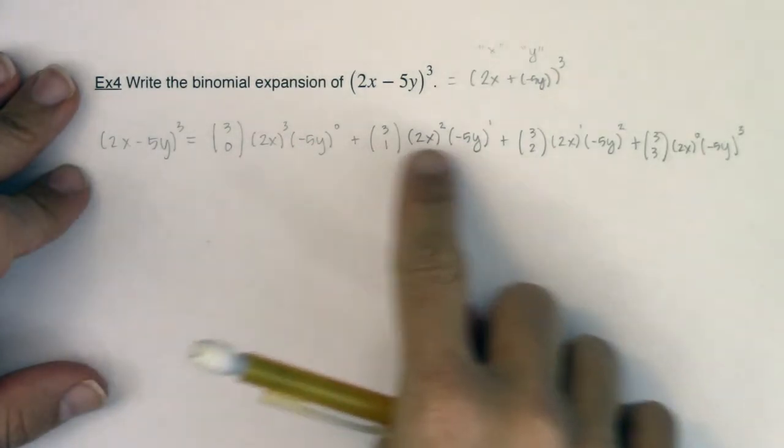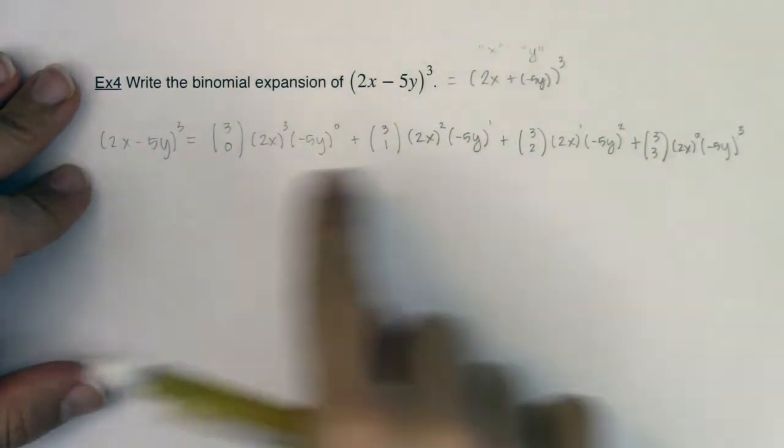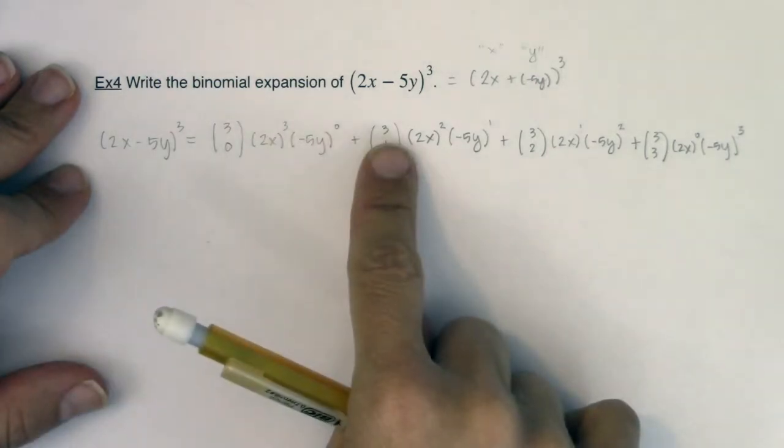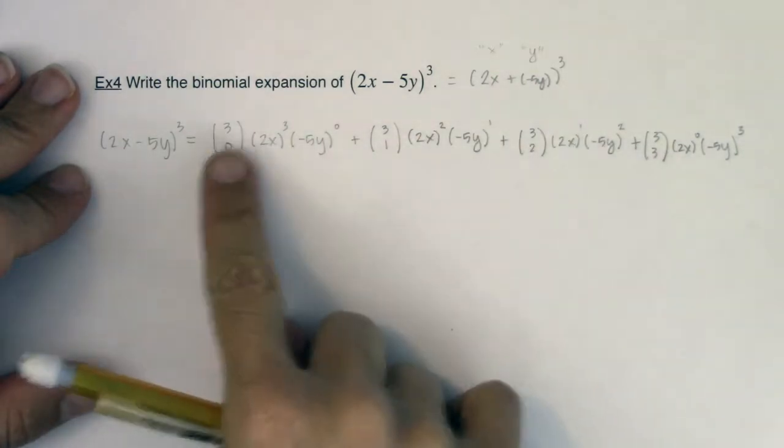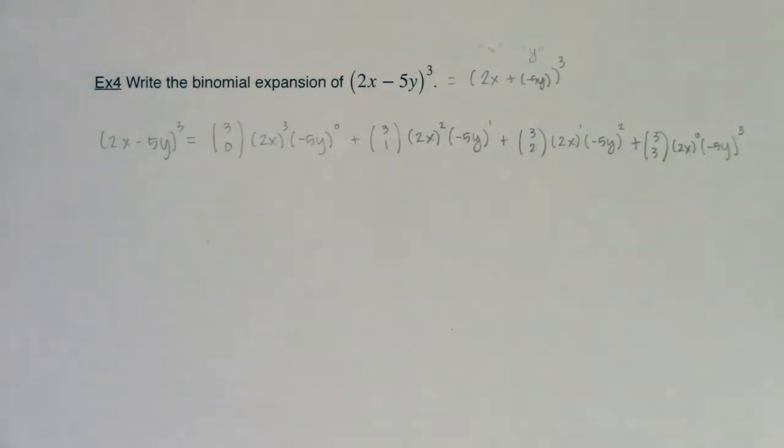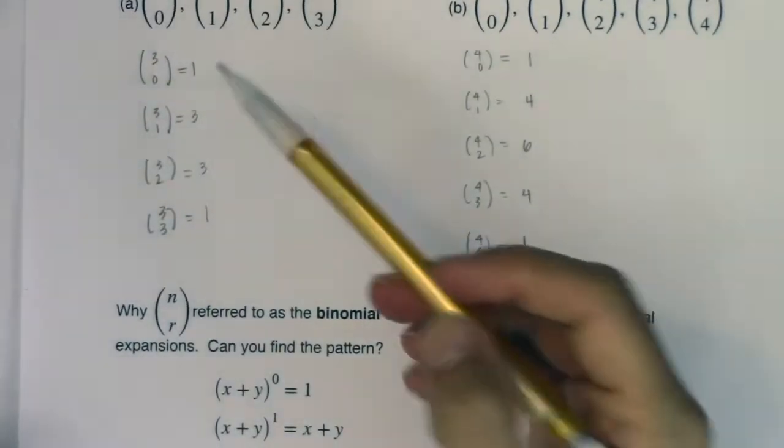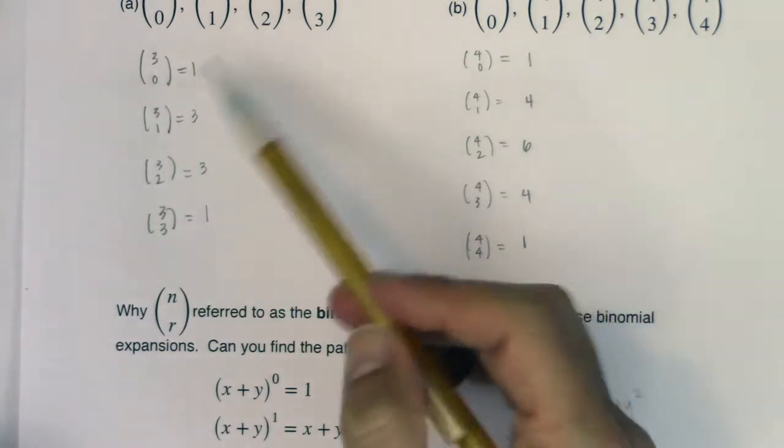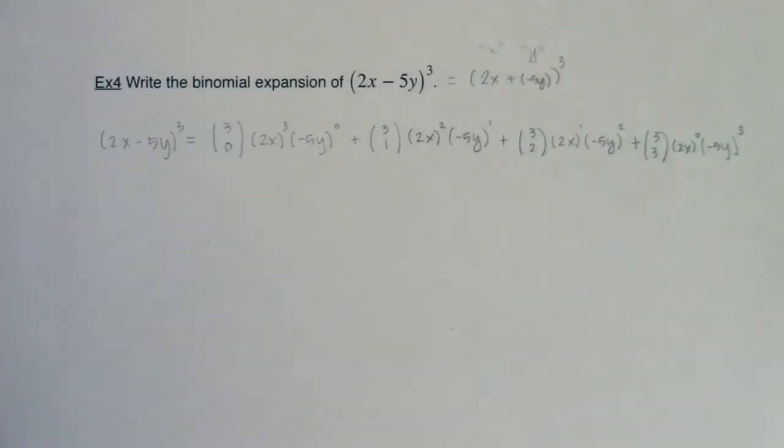We looked at these binomial coefficients back in example 2. We know 3 choose 0 is 1, 3 choose 1 is 3, 3 choose 2 is 3, 3 choose 3 is 1. We have that pattern: 1, 3, 3, 1. We've done these binomial coefficients before, so instead of plugging them into my calculator, I'm just going to reference that for right now.